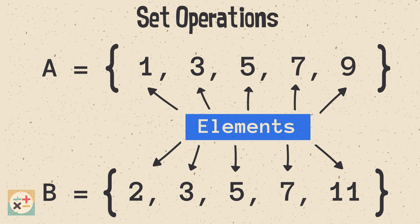Here, A is the name of the first set, and the elements inside the curly braces are the odd numbers. B is the name of the second set. The elements of the set are prime numbers.